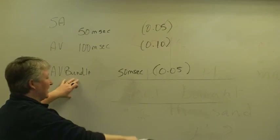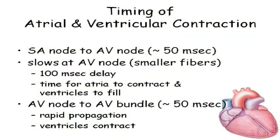Once the signal hits the AV bundle, it propagates very rapidly. This timing is just how long it takes the signal to travel from the SA node downward — not how long it takes the heart to contract. We're talking about delivering the signal to those heart muscle cells. The delay at the AV node is intentional: it allows the atria to finish contracting before the ventricles receive the signal.